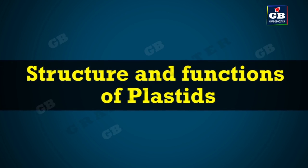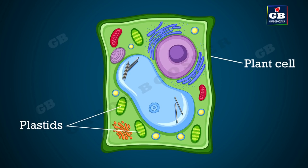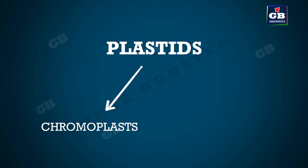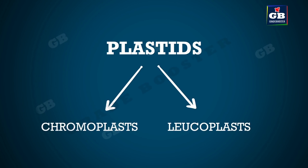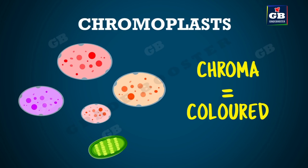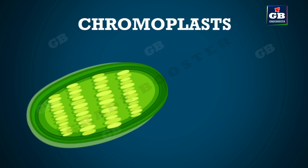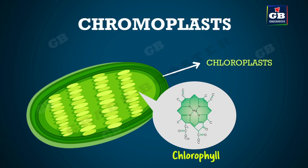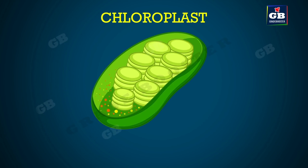Plastids are cell organelles found only in plant cells and are of two types: chromoplasts and leucoplasts. Chromoplasts contain color pigments in their stroma. Chromoplasts that contain more chlorophyll and carry on photosynthesis are called chloroplasts, which are green due to chlorophyll. Some chloroplasts also contain yellow or orange colored pigments along with chlorophyll.